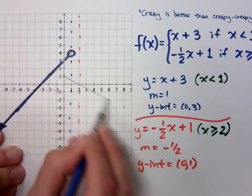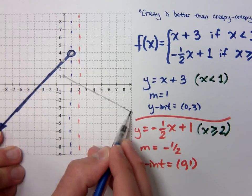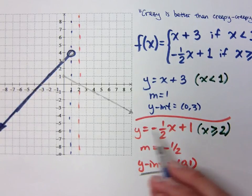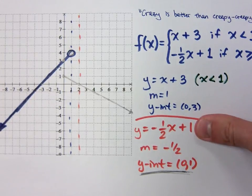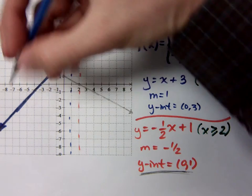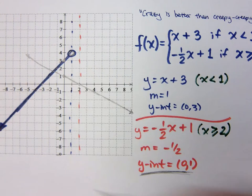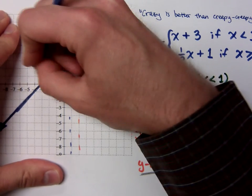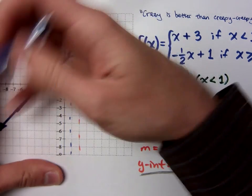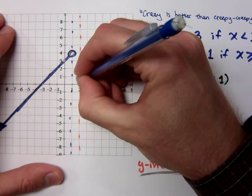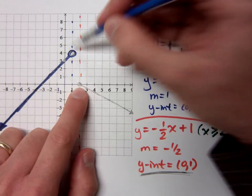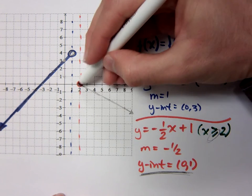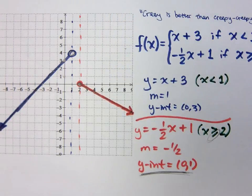When I graph this I'm going to get the line going out to the right. Now, the y-intercept 0, 1 — even if I didn't have the condition, the line goes through 0, 1. But I'm cutting it off at x equals 2. At that point I get to include it — I use a closed circle — because the conditional statement says 'greater than or equal to.' So close circle, and I graph it going out from there.